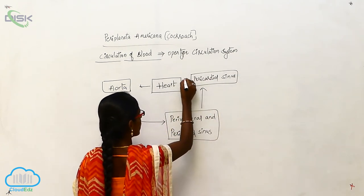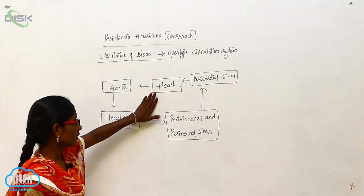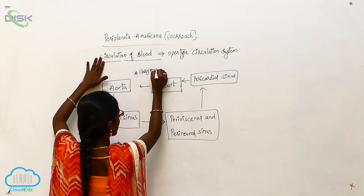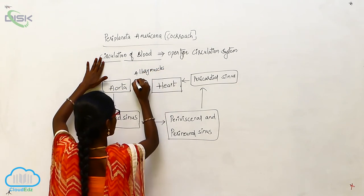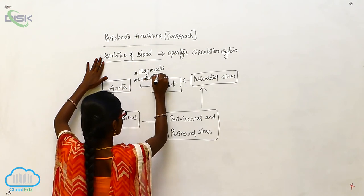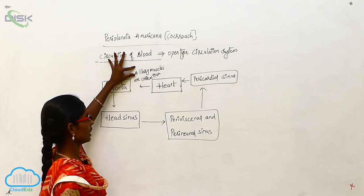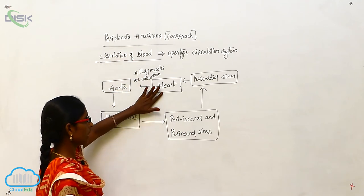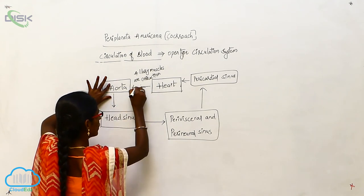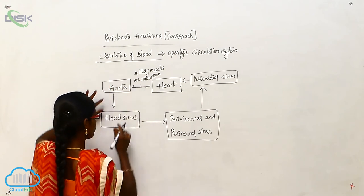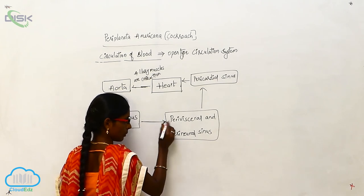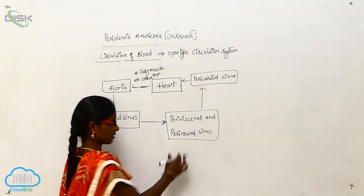In this mechanism, in the heart, the alary muscles undergo contraction. Because of the contraction of alary muscles, the blood goes from the heart to the aorta. By the aorta, it will reach the head sinus. From the head sinus, it will reach the perivisceral and perineural sinus.